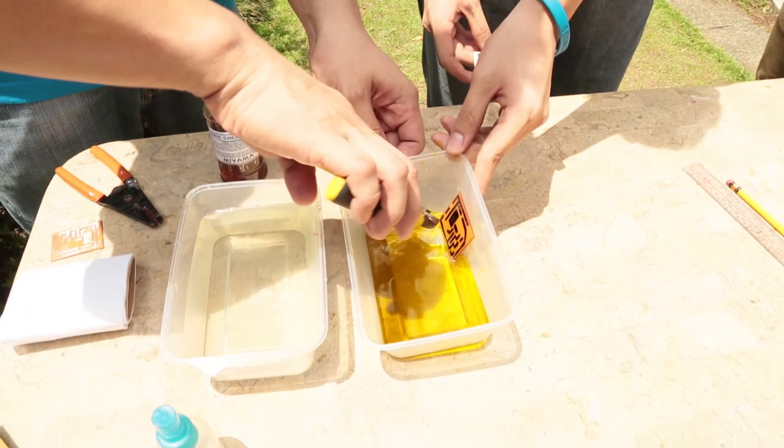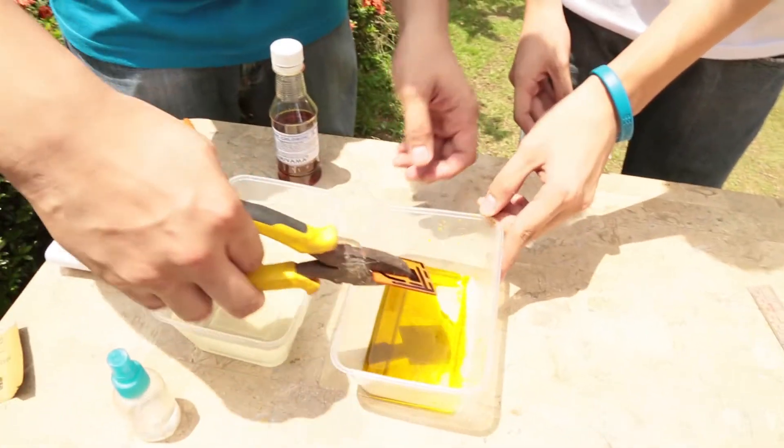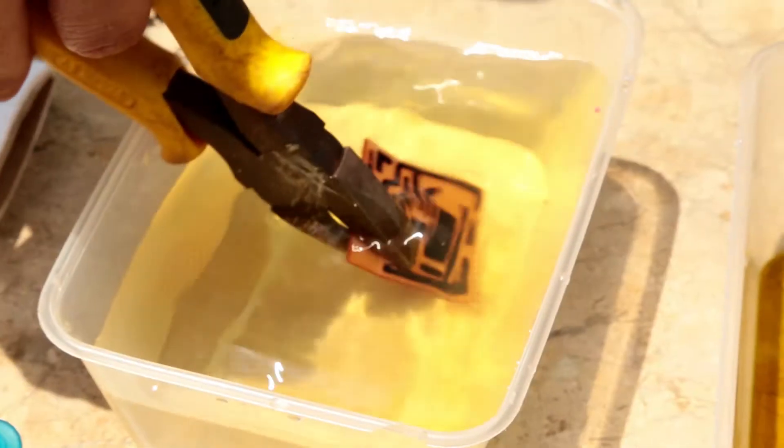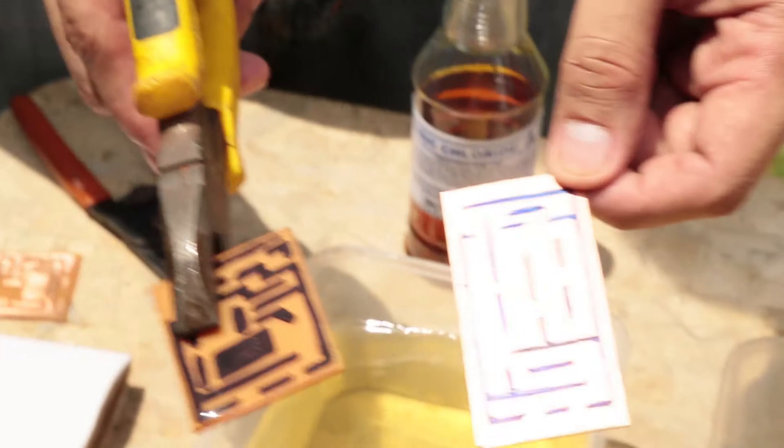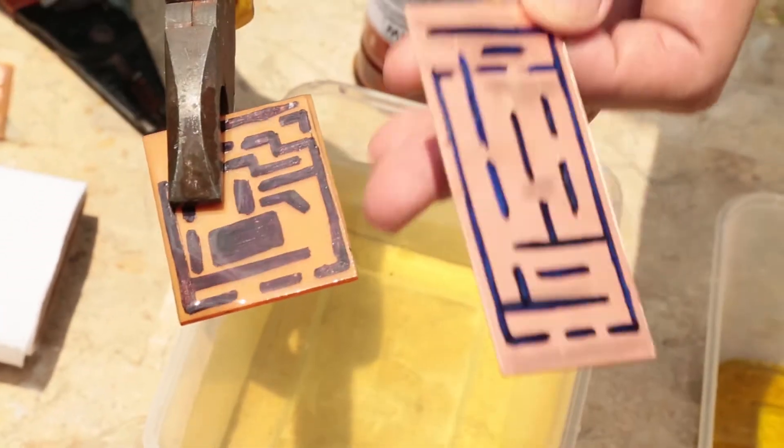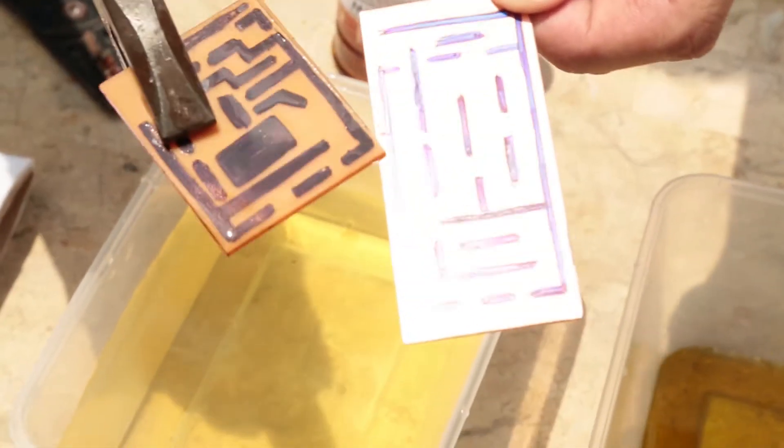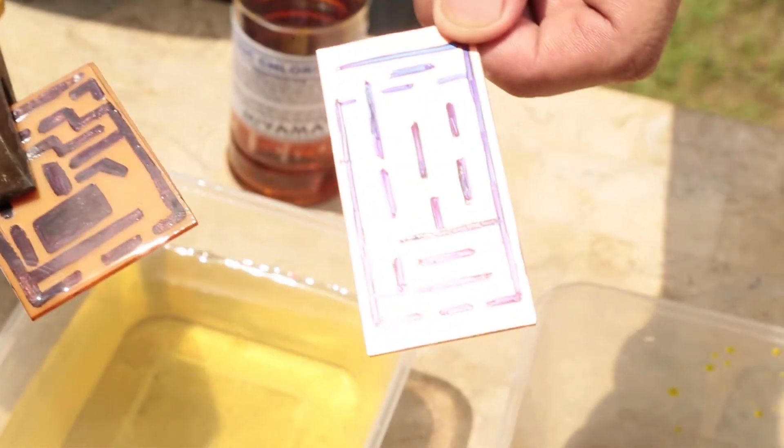If you don't have gloves, you can use layers. We're going to wash it in water—running water is better. As you can see, comparing them, this one has its unwanted copper already gone, compared to this one which still has the copper there.